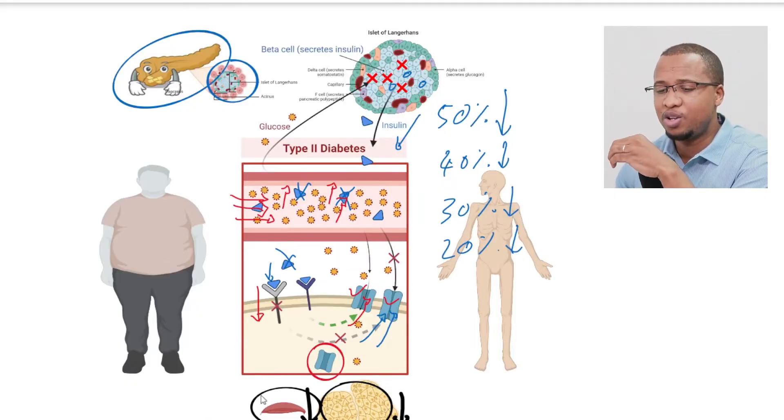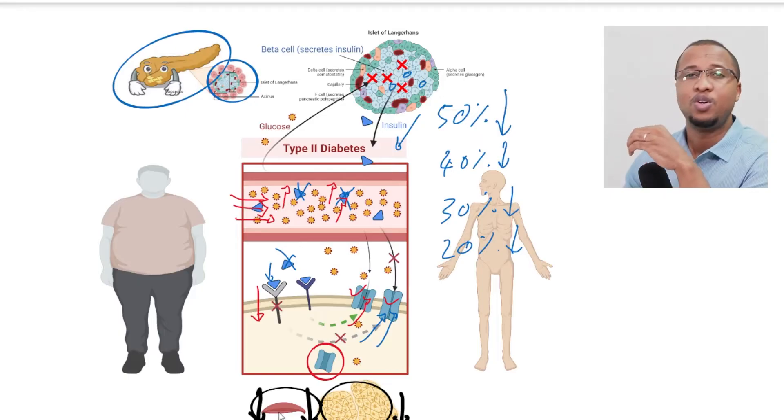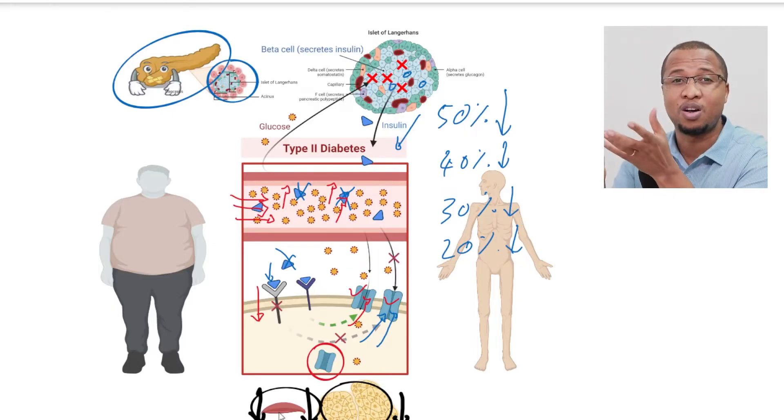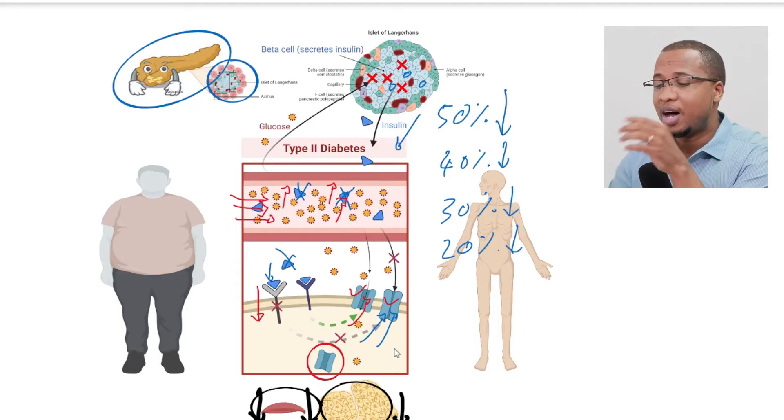Now, another thing that happens is that when you lose muscle, you lose a lot of water. Because muscles store glycogen and they retain water. So when you are shrinking, your muscles are shrinking, you're also losing water. And you lose even more weight.